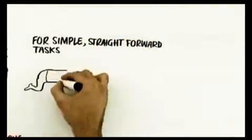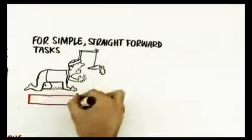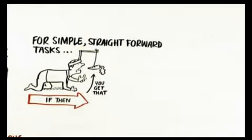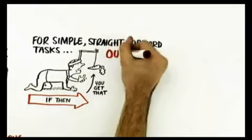For simple, straightforward tasks, those kinds of incentives, if you do this, then you get that, they're great. For tasks that are algorithmic, set of rules where you have to just follow along and get a right answer, if-then rewards, carrots and sticks, outstanding.